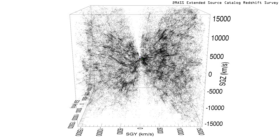Each black dot is a galaxy with a measured redshift in the two-mass extended source catalog. The flux-limited selection of this survey results in a spatial coverage that is densest near the center. Obscuration by the Milky Way creates the large vertical artificially vacant zone.